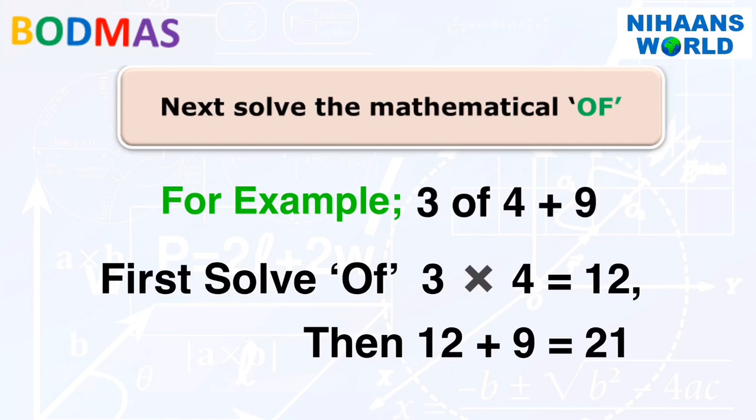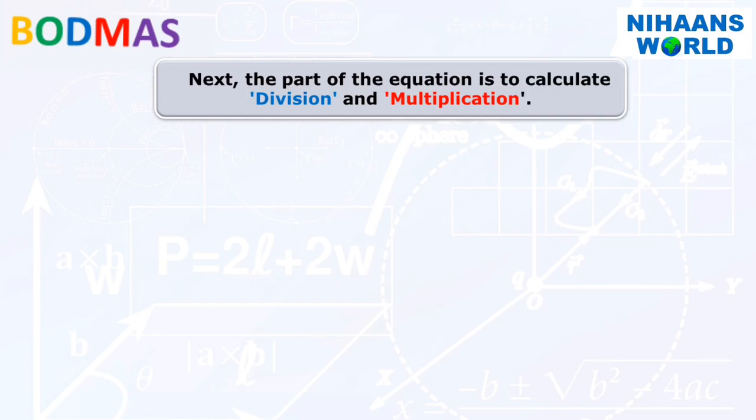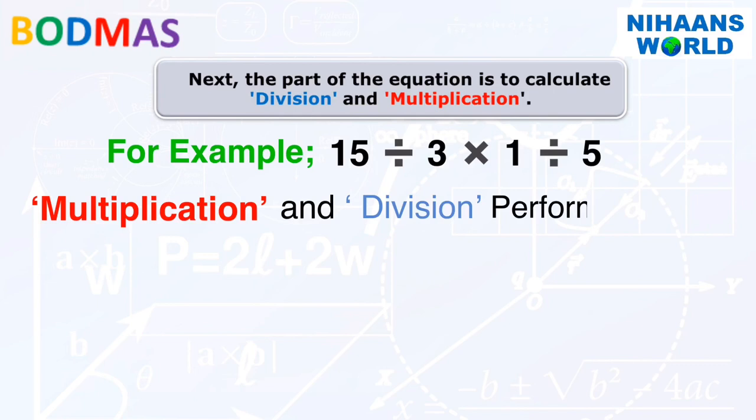The next part of the equation is to calculate division and multiplication. We know that when division and multiplication follow one another, then their order in that part of the equation is solved from left side to right side. For example, 15 divided by 3 multiplied by 1 divided by 5.